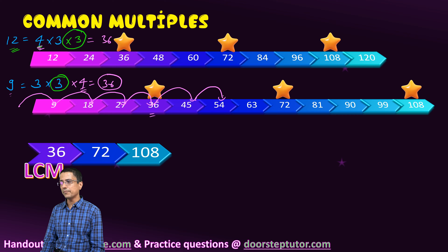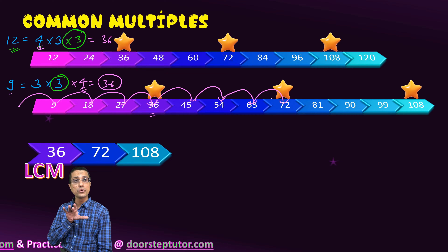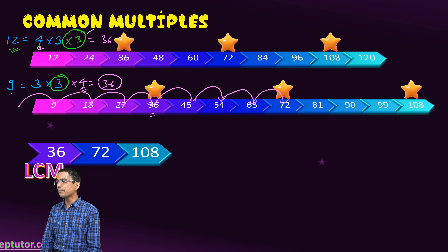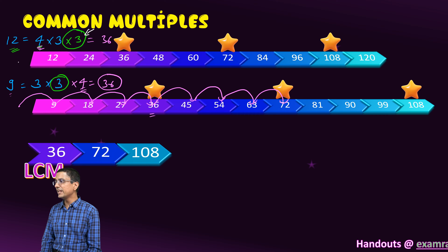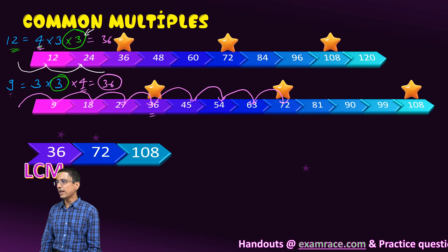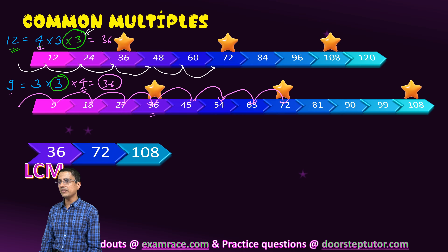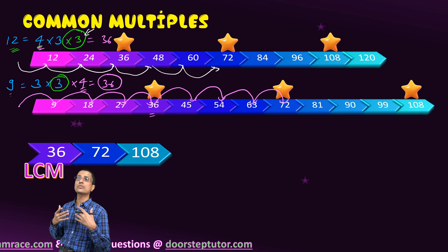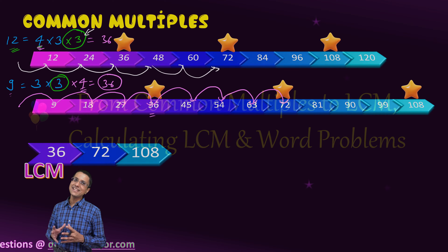So every 4th jump, I would get a multiple that is common to 12 as well, in the case of 9. Similarly, to produce the missing factor 3 in case of 12, I take 3 jumps of 12 — and every 3rd jump I would come across a multiple of 12 which is common to 9 as well. Very simple concept.